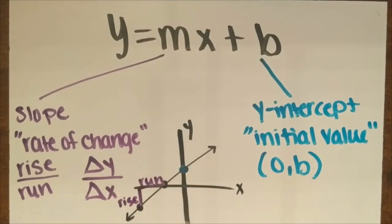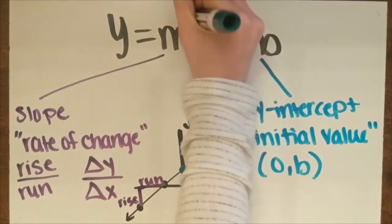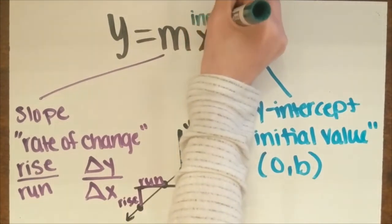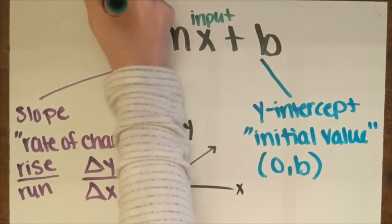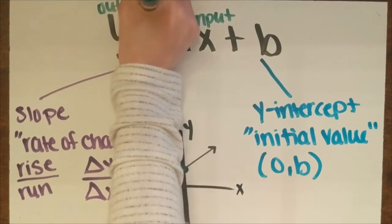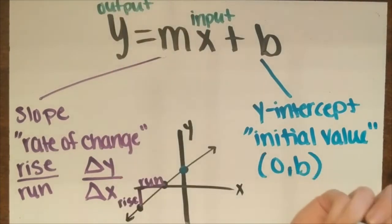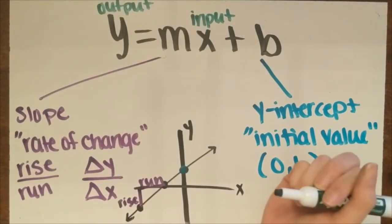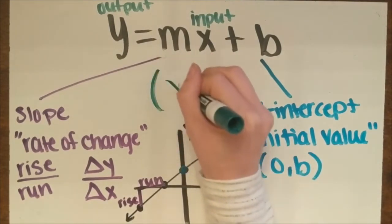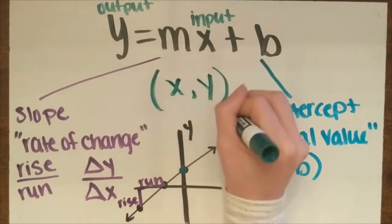Now the only other two variables we haven't talked about yet are your x and your y. x is known as your input value and y is known as your output value. These two create the ordered pairs that make all of the points to create your line. And remember that ordered pairs are x comma y.